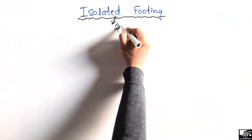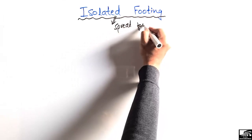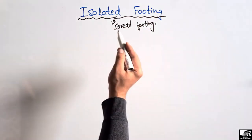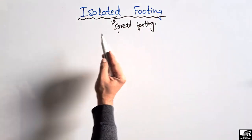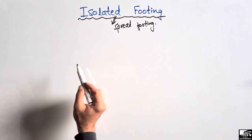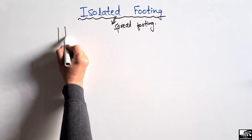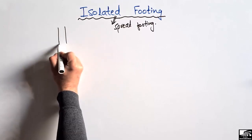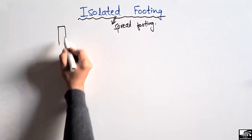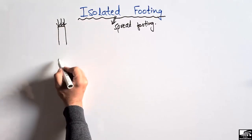The isolated footing is also known as the spread footing, and it is the most simple type of footing. It is a footing used to take the load of a single column. For example, if I want to explain with the help of a figure, let's consider this is any column and there is any load acting on the top of this column.